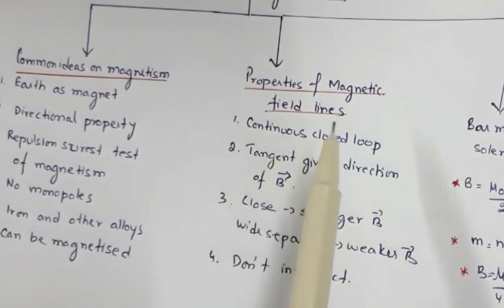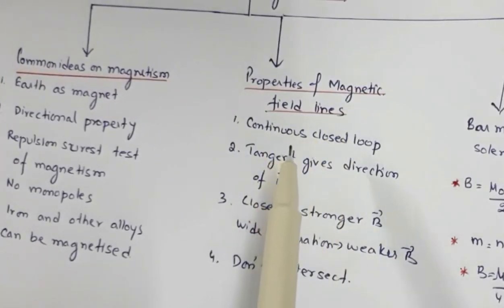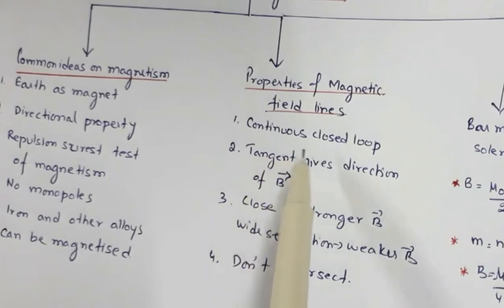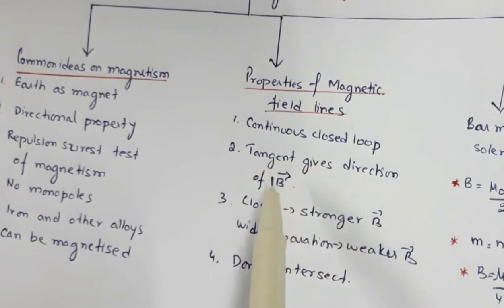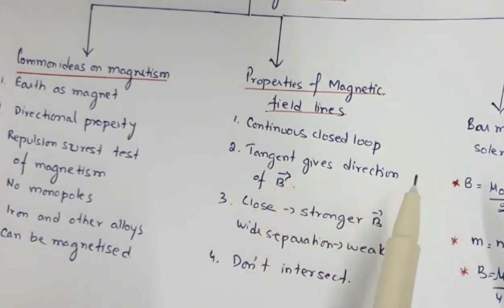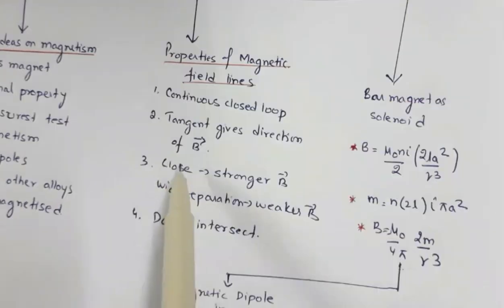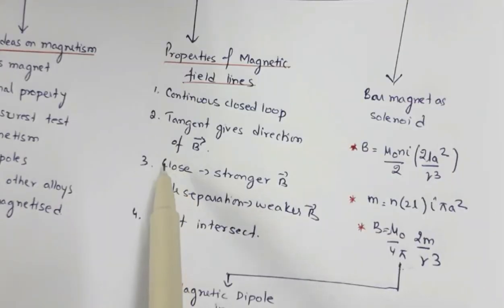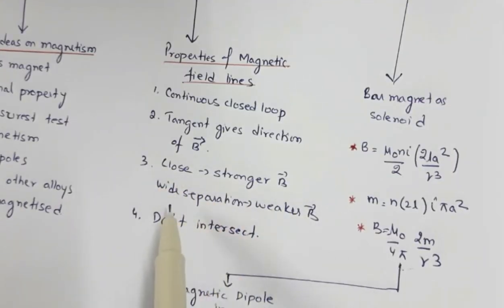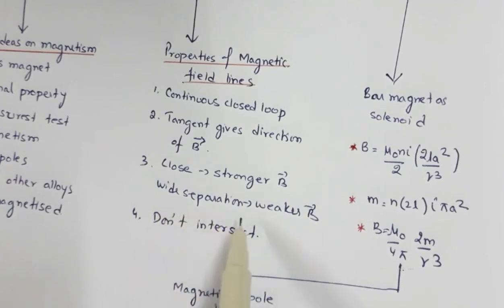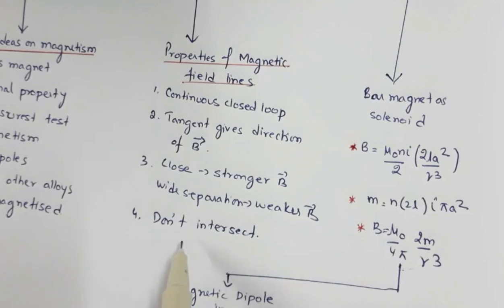Then we have the properties of magnetic field lines: they are continuous closed loops; the tangent at any point on the magnetic field lines gives the direction of the magnetic field. In regions where the magnetic field lines are very close, you have a stronger magnetic field, and in regions where there is a wide separation, the field is weaker. The magnetic field lines do not intersect.